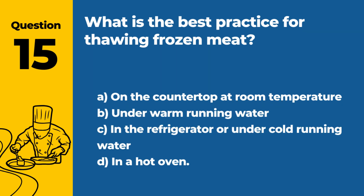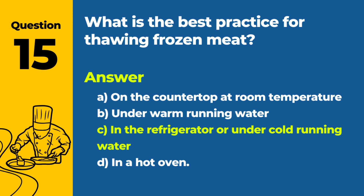Question 15: What is the best practice for thawing frozen meat? a. On the countertop at room temperature. b. Under warm running water. c. In the refrigerator or under cold running water. d. In a hot oven. Answer: c. In the refrigerator or under cold running water. The best practices for thawing frozen meat include doing it in the refrigerator or under cold running water to prevent bacterial growth.